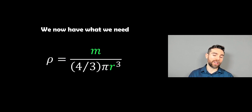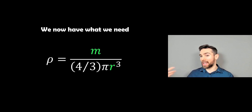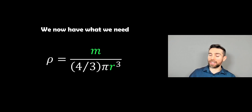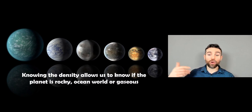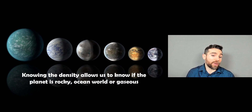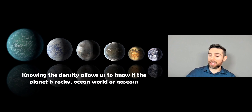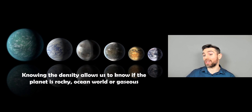Now we have everything we need — the mass and the radius — so we can calculate the density of the planet. Not every exoplanet can have its density calculated, because we can't always get both a transit and a radial velocity measurement together. But if we can, it gives an enormous amount of information about the planet: whether it's likely a rocky planet, an ocean world, or more like a gas giant. So getting the density is very useful.